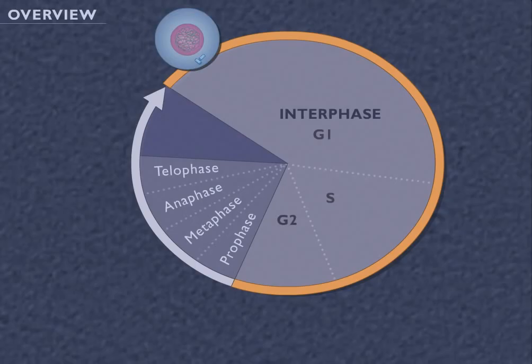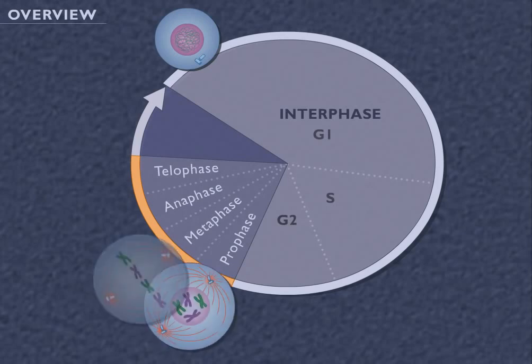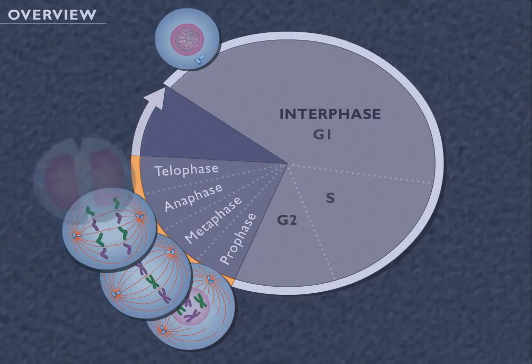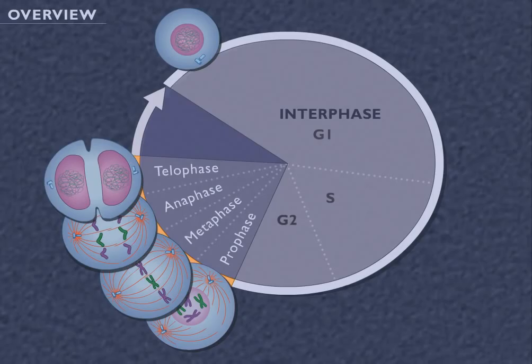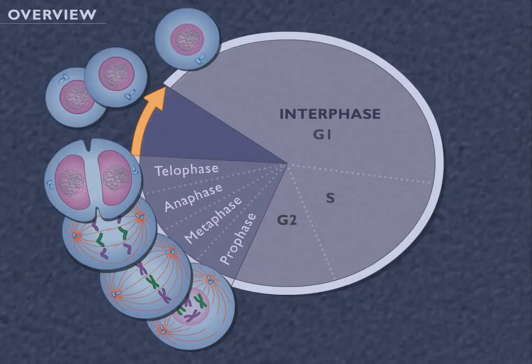Mitosis, or the division of the nucleus, consists of four phases: prophase, metaphase, anaphase, and telophase. In these phases, duplicate copies of the chromosomes are split equally. Finally, the cell's cytoplasm divides during cytokinesis, resulting in the formation of two genetically identical daughter cells.